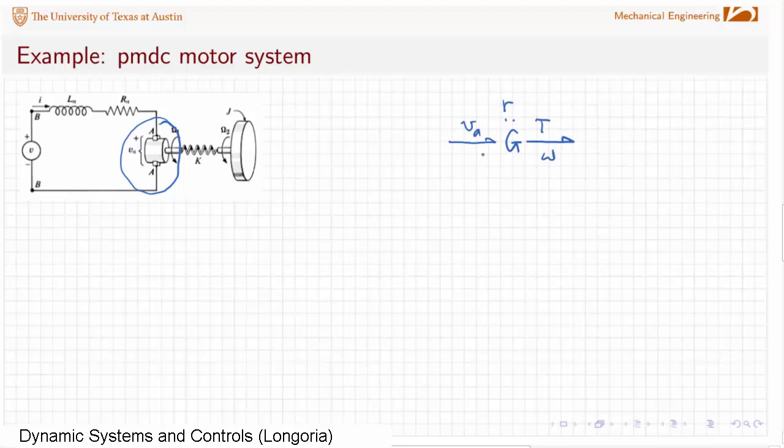We know that the back EMF here, which is indicated by V, that V sub A, is related to omega right through that, whatever this modulus is. I'm going to go ahead and put an R there. And then there's a torque related to a current. So this is modeling just that ideal conversion from whatever current you have in this armature circuit. That's the current, and it's being transformed into torque.